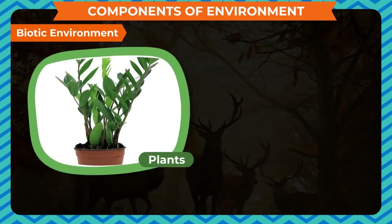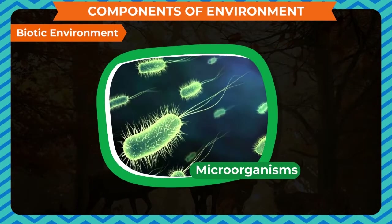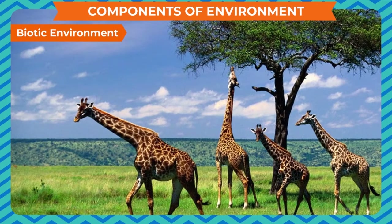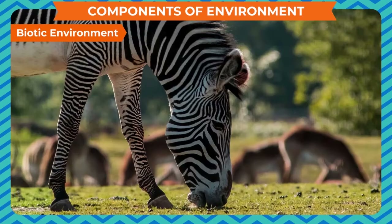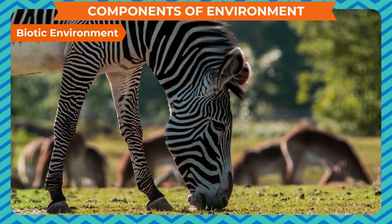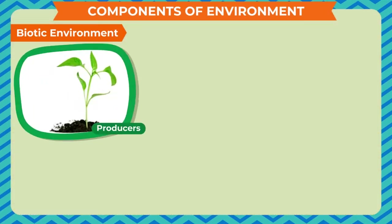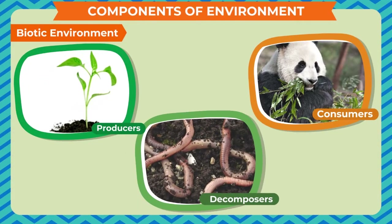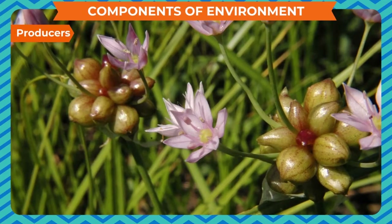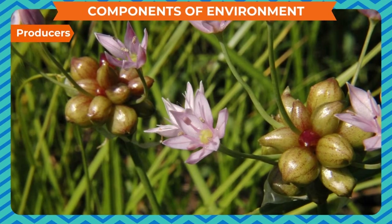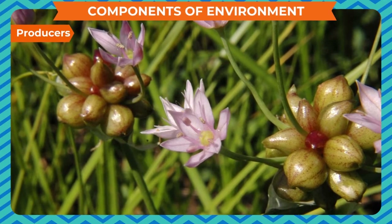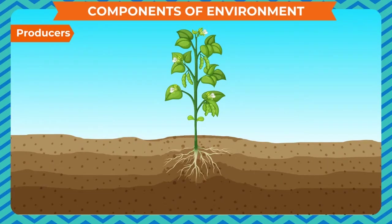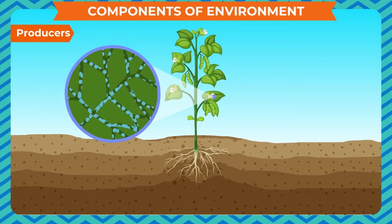Biotic environment includes all the living things. All plants, animals, and microorganisms are the integral part of biotic environment. The components of biotic environment are broadly classified into three categories: producers, consumers, and decomposers. Those living things which can produce their food themselves are called producers.